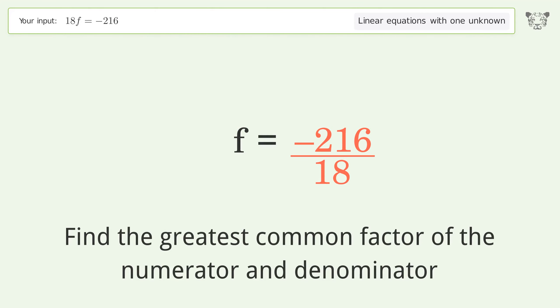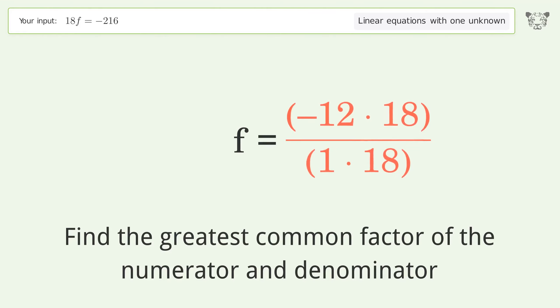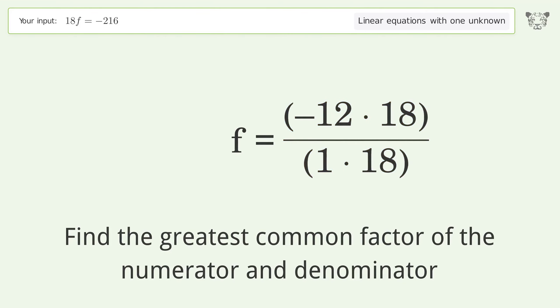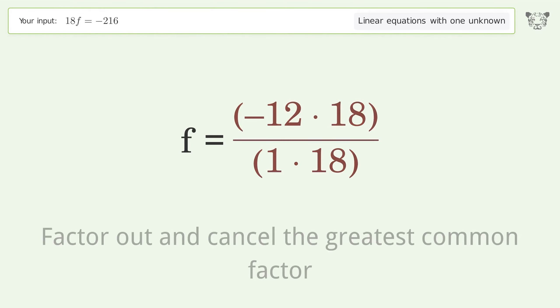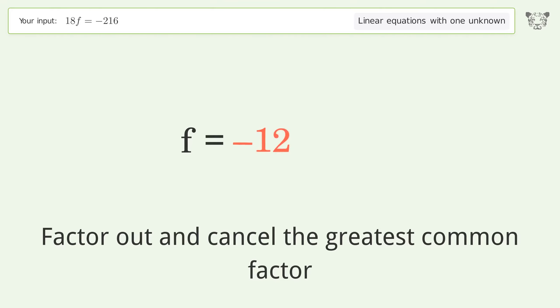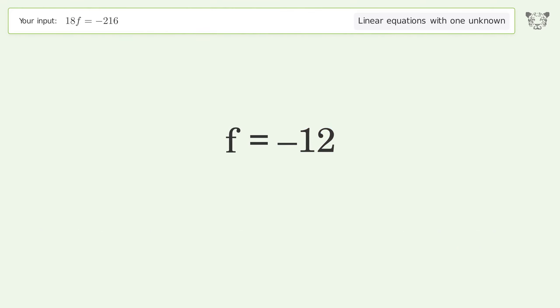Find the greatest common factor of the numerator and denominator, then factor out and cancel the greatest common factor. The final result is f equals negative 12.